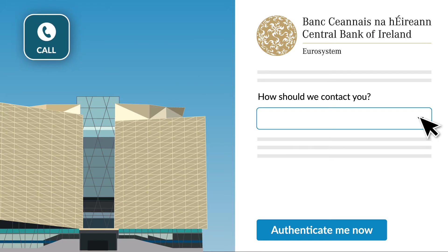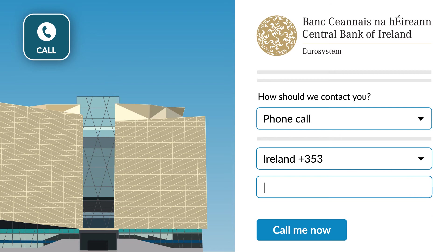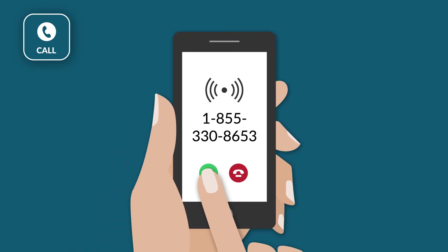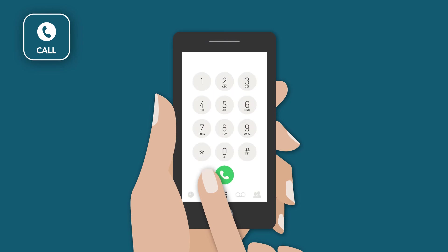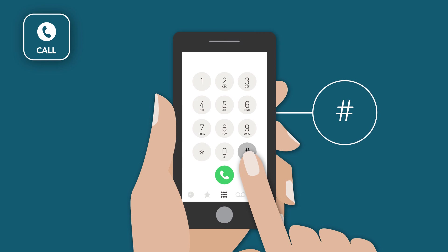If you choose phone call you will be prompted to enter a mobile or landline number. We recommend entering a mobile number since you may not always have easy access to a landline. This will trigger an automated phone call that you will need to answer. Follow the instruction to press the hash key on your phone and your setup will be complete.